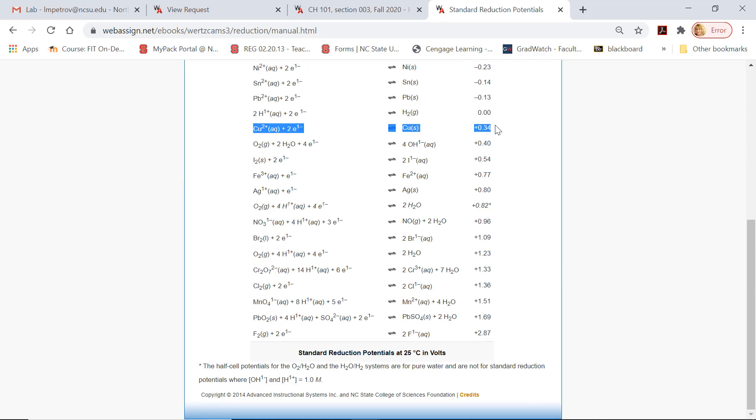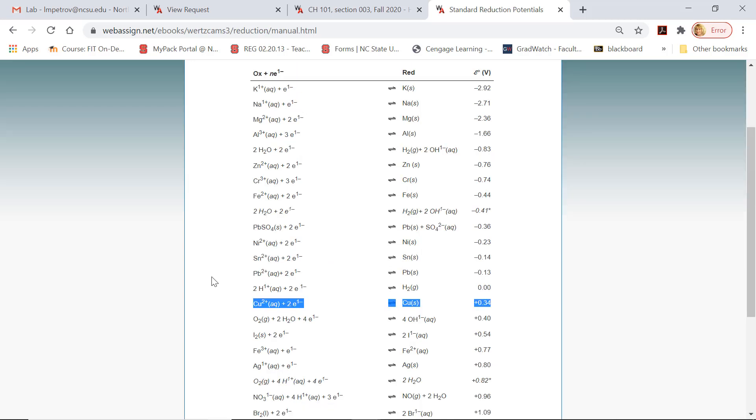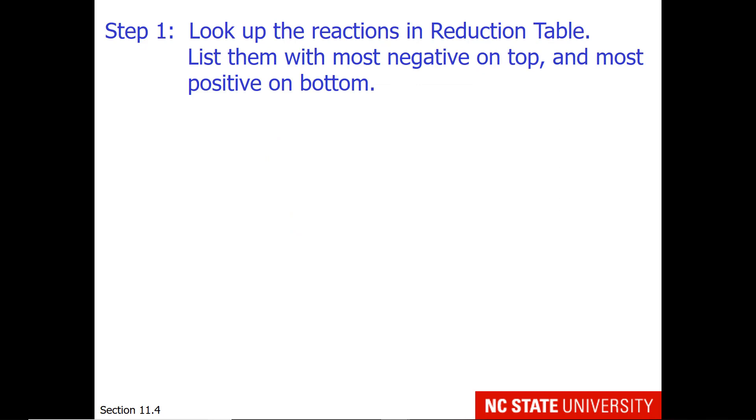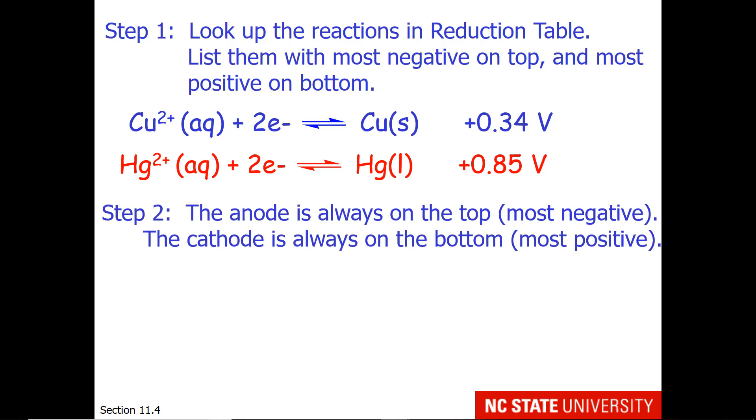Here we see the reduction potential for our copper half cell. The mercury half cell is not on this particular table. I looked it up in a more expanded version on the internet. The value of the mercury 2+ /mercury half cell is +0.85. So when I list my half reactions, I'm going to put the most negative on top and the most positive on the bottom. +0.34 is closer to negative than +0.85. If you list them this way, then the anode is always on the top for a galvanic cell and it's your most negative reduction potential. The cathode is always on the bottom for a galvanic cell and is your most positive reduction potential.